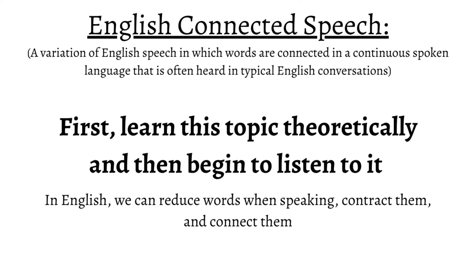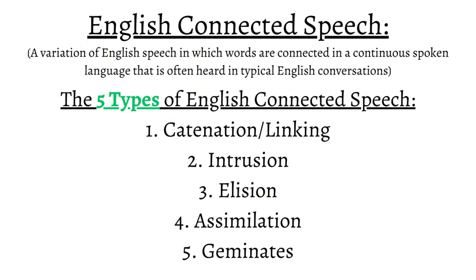In English, there are five types of connected speech: catenation, also known as linking, intrusion, elision, assimilation, and geminates. The names may be complicated, but don't worry about them for now.